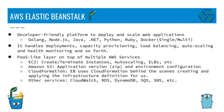Elastic Beanstalk is a developer-friendly platform to deploy and scale web applications. These applications could be developed in Golang, Node, Java, .NET, Python, Ruby, or we can even deploy a single Docker container or multiple Docker containers.